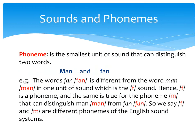Sounds and phonemes. A phoneme is the smallest unit of sound that can distinguish two words. So the word 'fan' is different from the word 'man' in one unit of sound, which is the F sound. Man is different from fan in one unit of sound, which is the F sound. In this way, we say that F is a phoneme, and the same is true for the phoneme M, which can distinguish 'man' from 'fan'. So we say that the F sound in 'fan' and the M sound in 'man' are different phonemes of the English sound system.